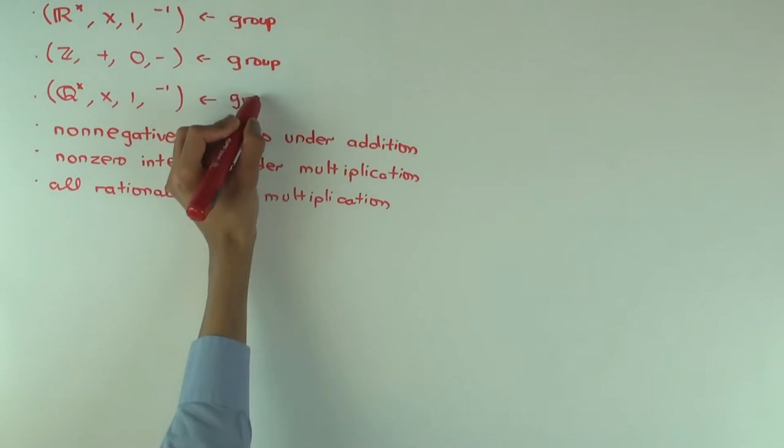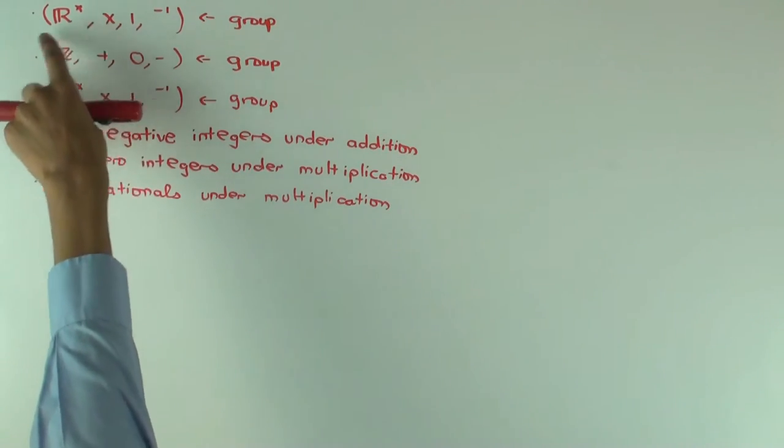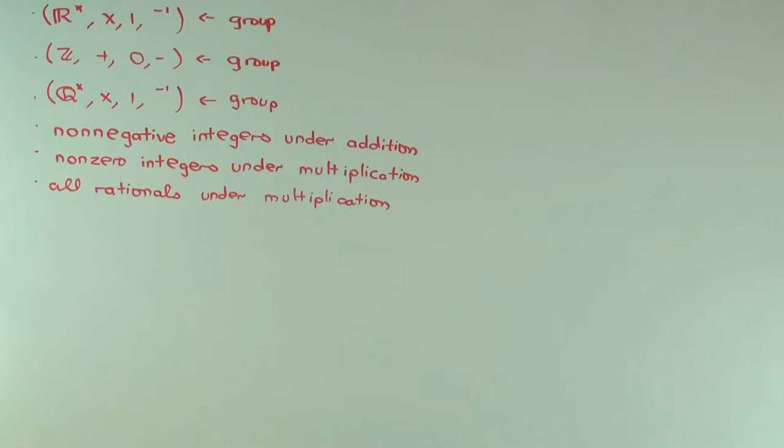So the point with the first and the third example, the relation is this one is sort of living inside this. This group lives inside that group. We'll see a term for that. That's what we should be calling subgroup. A bit later we'll see that.